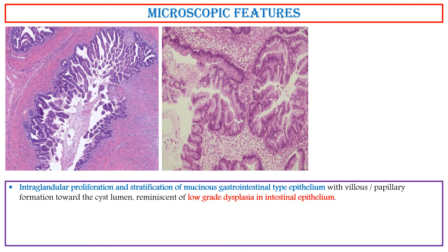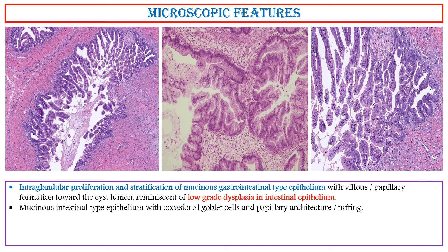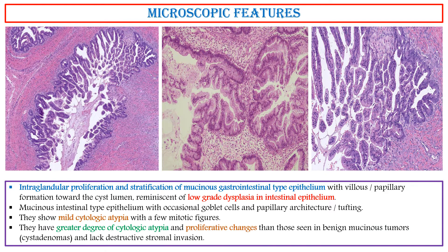Microscopic Features: These two photos show intraglandular proliferation and stratification of mucinous gastrointestinal type epithelium with villous papillary formation toward the cyst lumen, reminiscent of low-grade dysplasia in intestinal epithelium. This photo shows mucinous gastrointestinal type epithelium with occasional goblet cells and papillary architecture tufting. They show mild cytologic atypia with a few mitotic figures. They have a greater degree of cytologic atypia and proliferative changes than those seen in benign mucinous tumors (cystadenomas), and lack destructive stromal invasion.